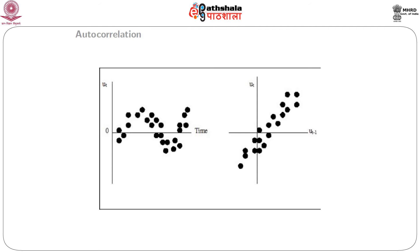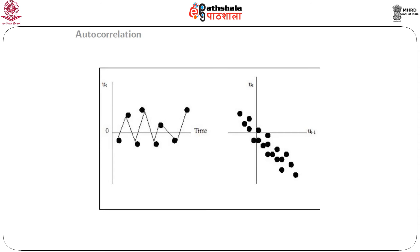We can graphically detect autocorrelation. In a plot of time on the x-axis versus the error term on the y-axis, we can see a cyclical pattern in the error terms. When we plot each error term against its preceding error term value, we see a positive linear trend — indicating positive autocorrelation. Conversely, plotting another set of error terms against time shows a pattern, and plotting those errors against their previous values reveals a negative linear correlation — indicating negative autocorrelation.